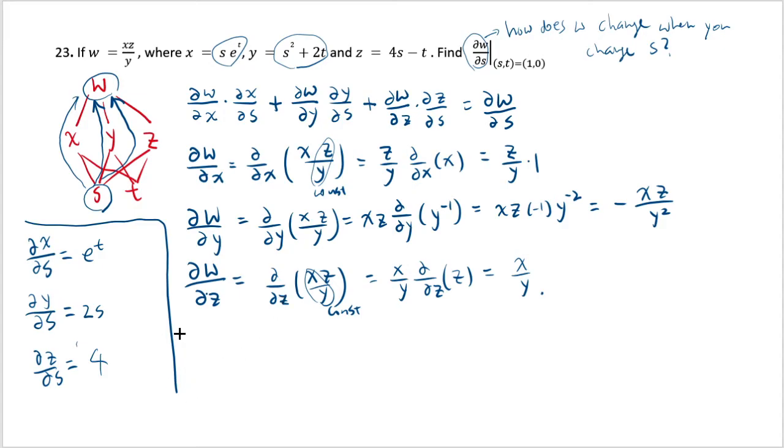So now, once we have all of these, then we can put them together using this formula, and write down change of w with respect to s as, put z/y times e^t, and then plus, the next one is negative xz/y² times 2s, this one here, plus x/y times 4.